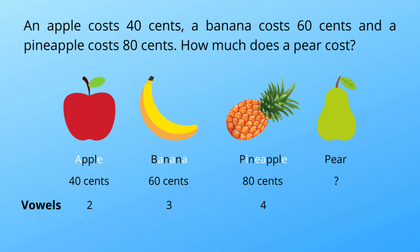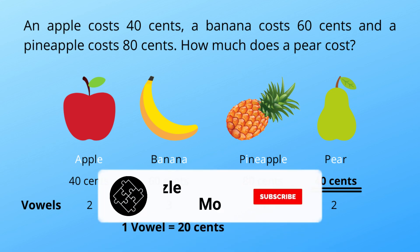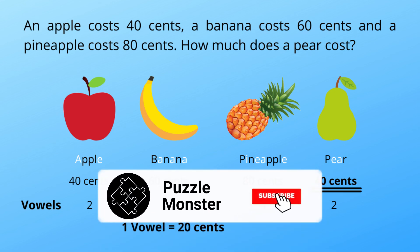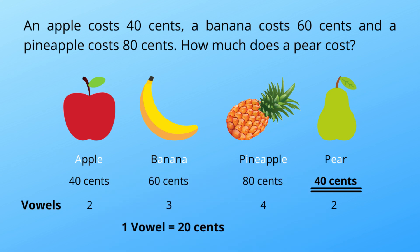So one vowel is equal to 20 cents. Let's go back to the question: how much does a pear cost? 'Pear' has two vowels, and that means it will cost 40 cents. That's the answer! Hope you enjoyed the video — please subscribe to the channel and stay tuned for the next one.